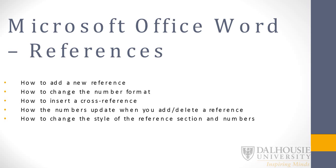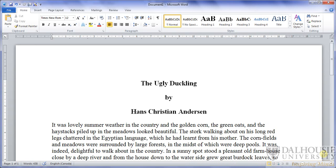This video tutorial will show you how to use the References section of Microsoft Office Word, which is an especially useful tool for scientists. In the tutorial, we will show you how to add a reference, change the number format of the references, insert a cross reference, how the numbers update when you add or delete a reference, and also how to change the style of the reference section and numbers. We will use Anderson's The Ugly Duckling as our sample document.